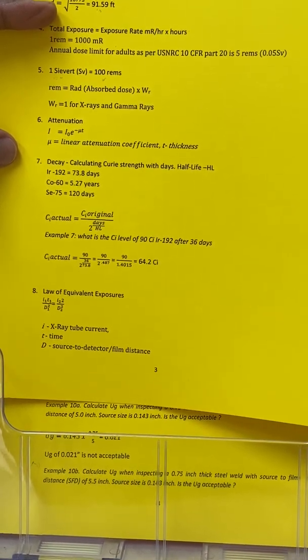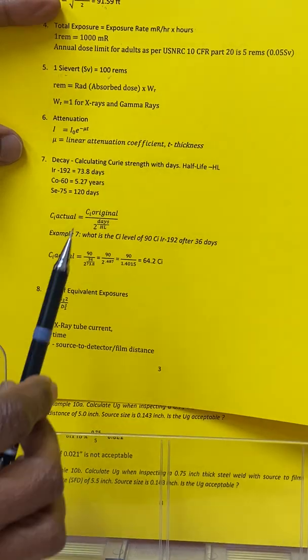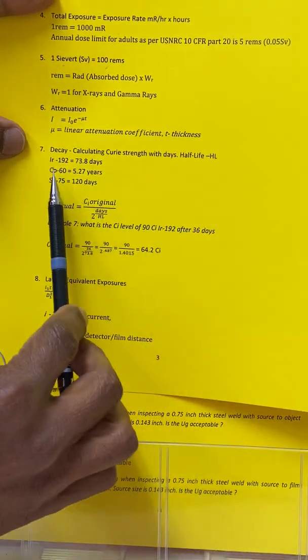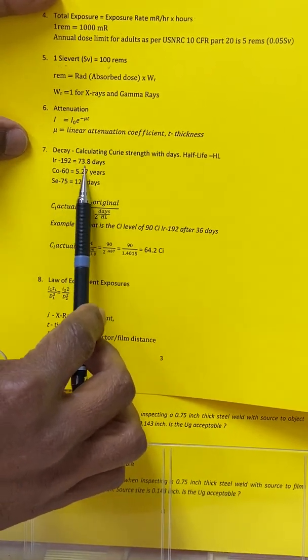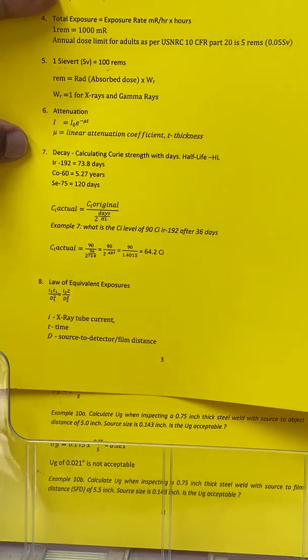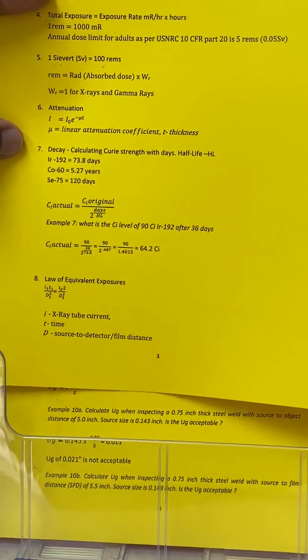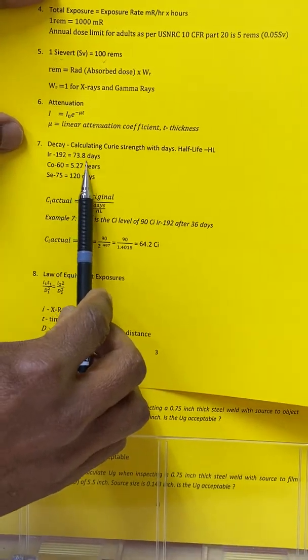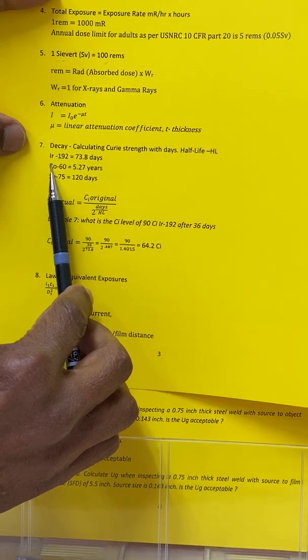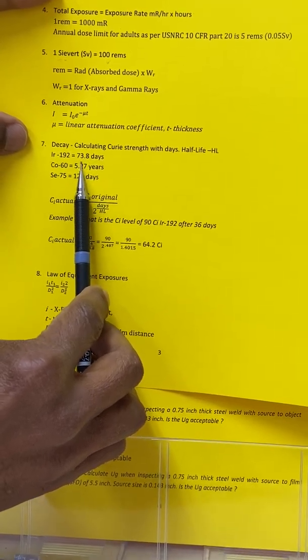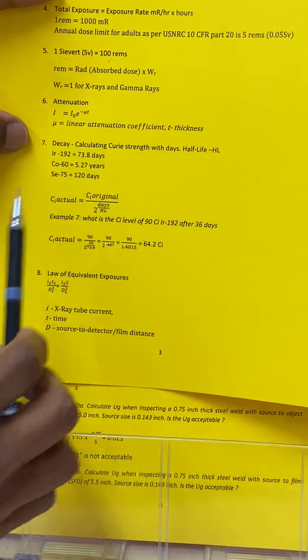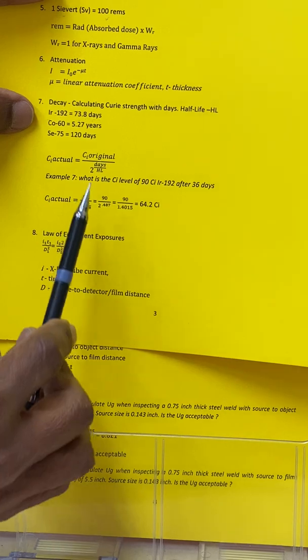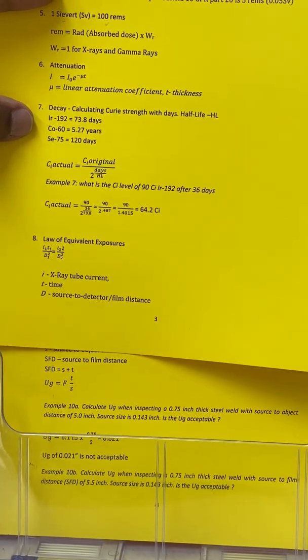This is given here—the half-life. The half-life of iridium-192 is 73.8 days. What it means is that if you buy a 100 curie iridium-192 source today, then after 73.8 days it will become half of that. So if you buy 100, after 73.8 days it will become 50, and then another 73.8 days it will become 25.